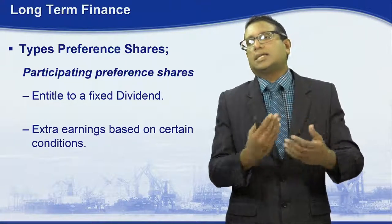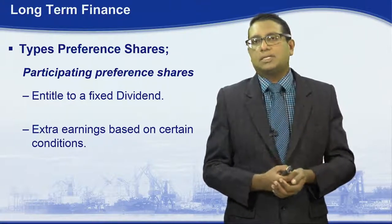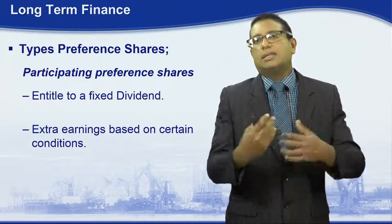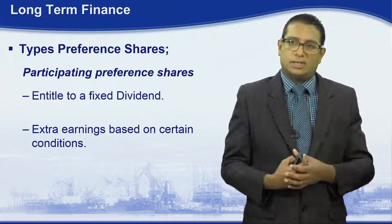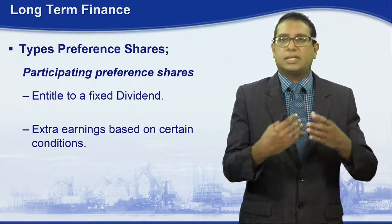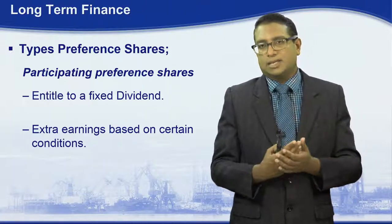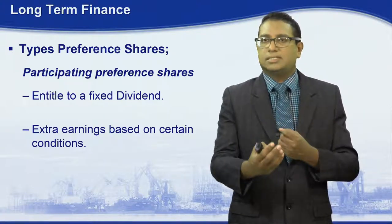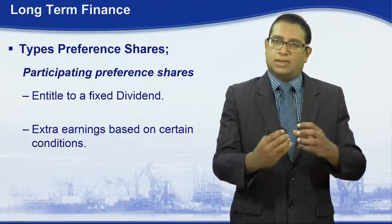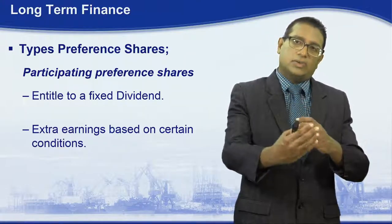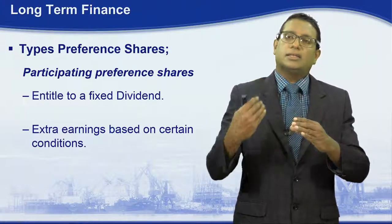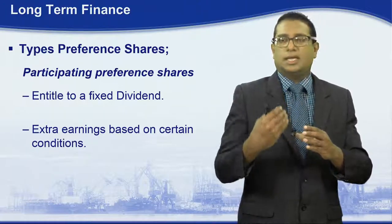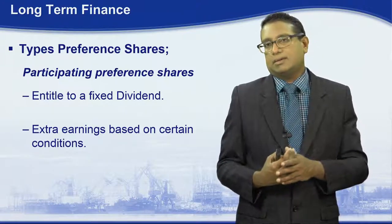Then there is another category called participating preference shares. These are entitled to a fixed dividend, but there is extra earnings — however, these extra earnings are based on certain conditions. Only upon meeting those certain conditions will the participating preference shareholders receive their additional dividend.